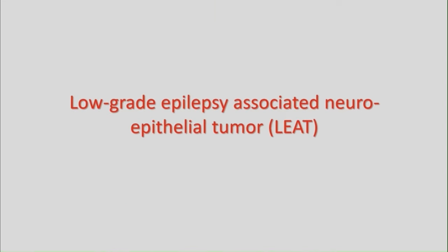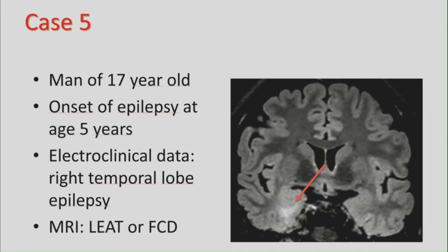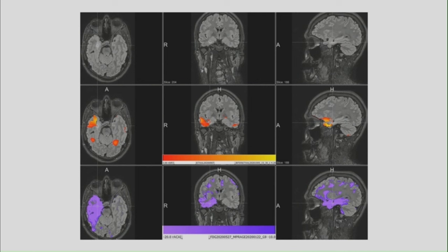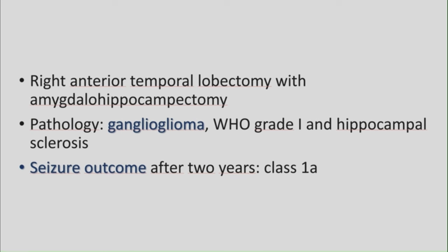I have one case with a low-grade epilepsy-associated neuroepithelial tumor — a 17-year-old man with epilepsy onset at age 5 and right temporal lobe epilepsy. MRI showed a lesion the radiologist thought was a LEAT or FCD. CISCOM showed hyperperfusion confined to that region. PET showed a fairly extensive hypermetabolic area in the right temporal lobe. He underwent a right anterior temporal lobectomy with amygdalo-hippocampectomy; pathology confirmed a ganglioglioma WHO grade 1 with hippocampal sclerosis, and outcome at year 2 was class 1A.